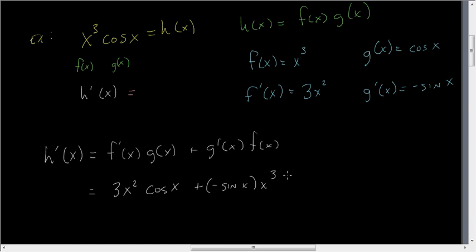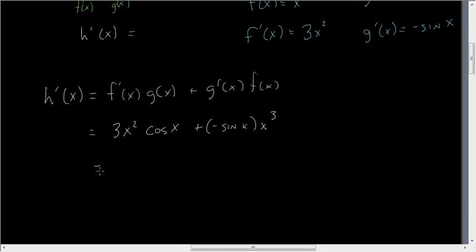And so what we're going to get when we do that is we're going to get 3x squared cosine x minus x cubed sine x. And that is the derivative of h(x).